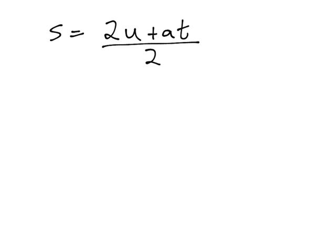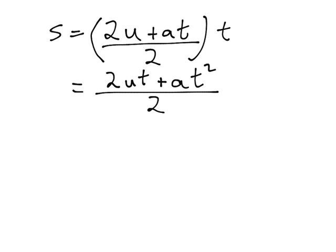We then multiply the t that's outside of the brackets with everything that's on the top of the fraction. So 2u multiplied by t is 2ut, plus at multiplied by t is at squared, and that's still all divided by 2.